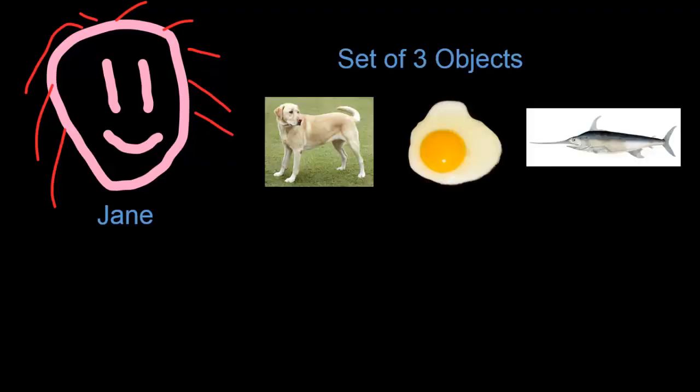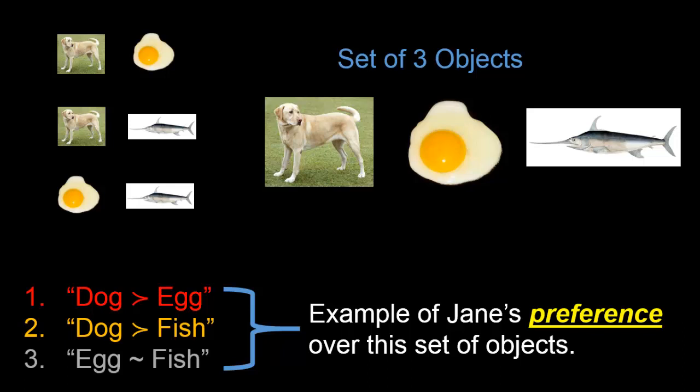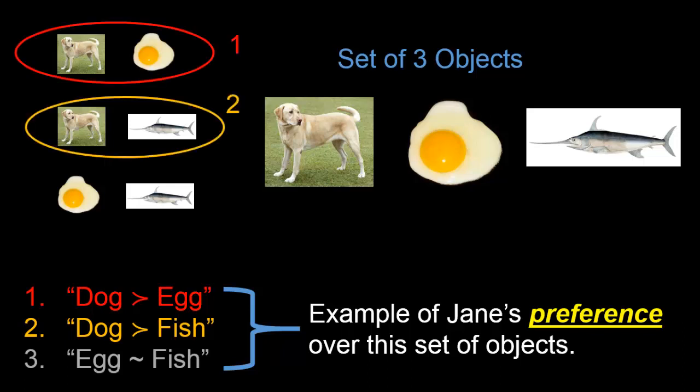Preference over an infinite set. Previously, we looked at Jane, who faced a set of three objects. We gave an example of Jane's preference over this set of objects. Her preference was simply a complete specification, or description, of her pairwise preferences over each possible pair of objects. In this case, we specified that she strictly preferred dog to egg, strictly preferred dog to fish, and was indifferent between egg and fish.